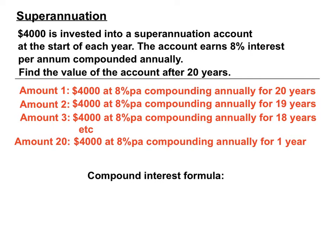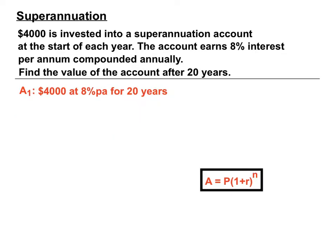Each of those amounts needs to be calculated using the compound interest formula: A = P(1 + r)^n, where P is the principal, r is the interest rate, and n is the number of time periods. For the first amount, P = $4,000, r = 0.08, and n = 20 years. The second amount is the same except it compounds for only 19 time periods, and the third for 18 years.